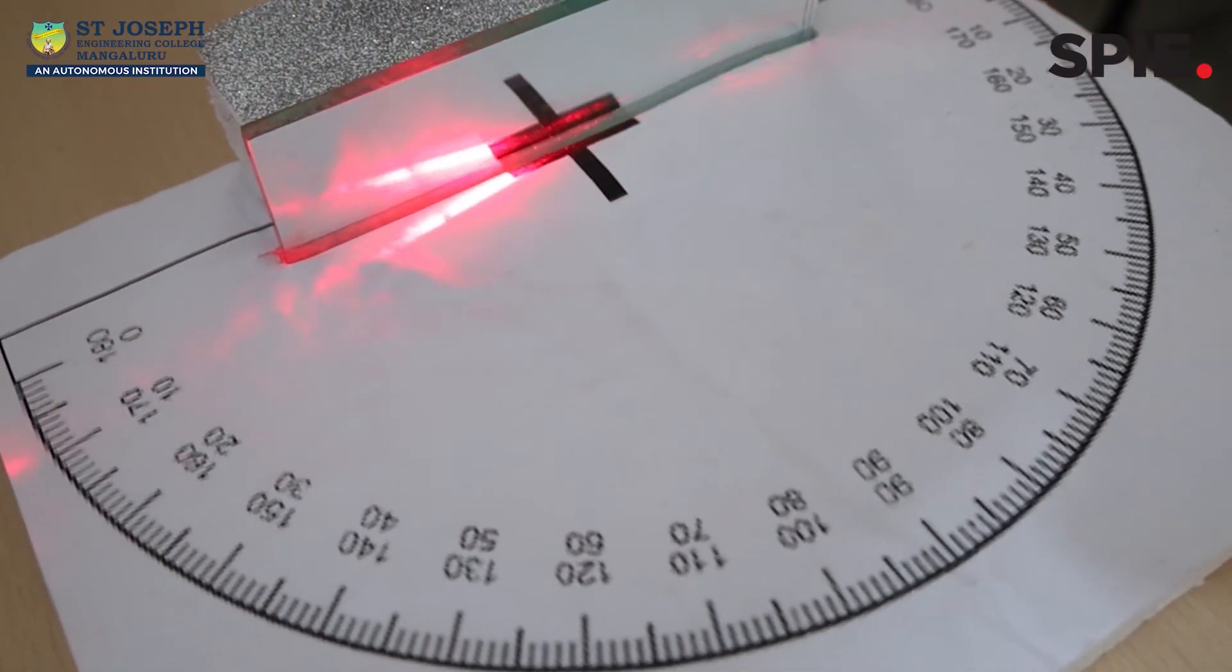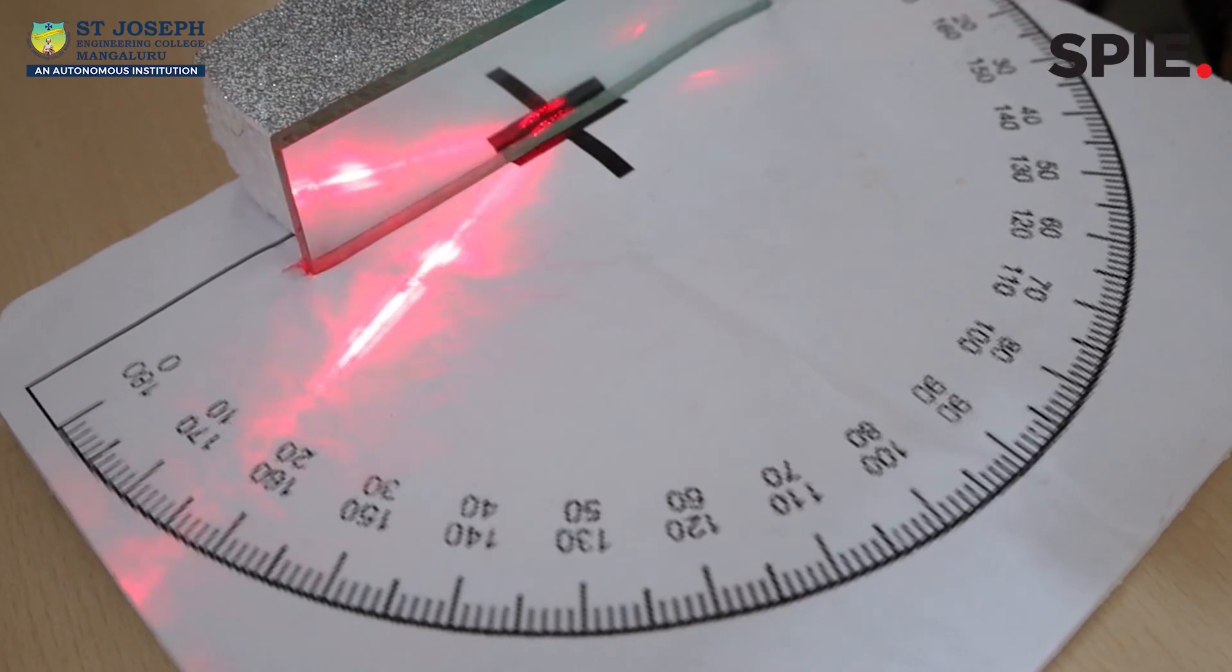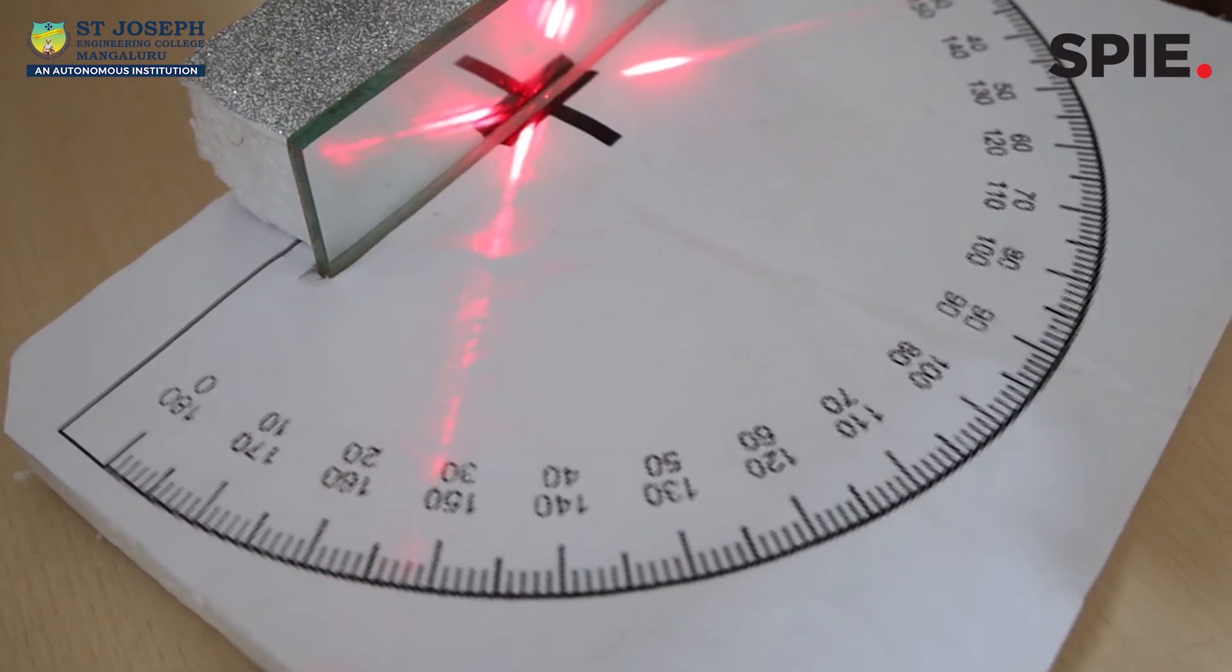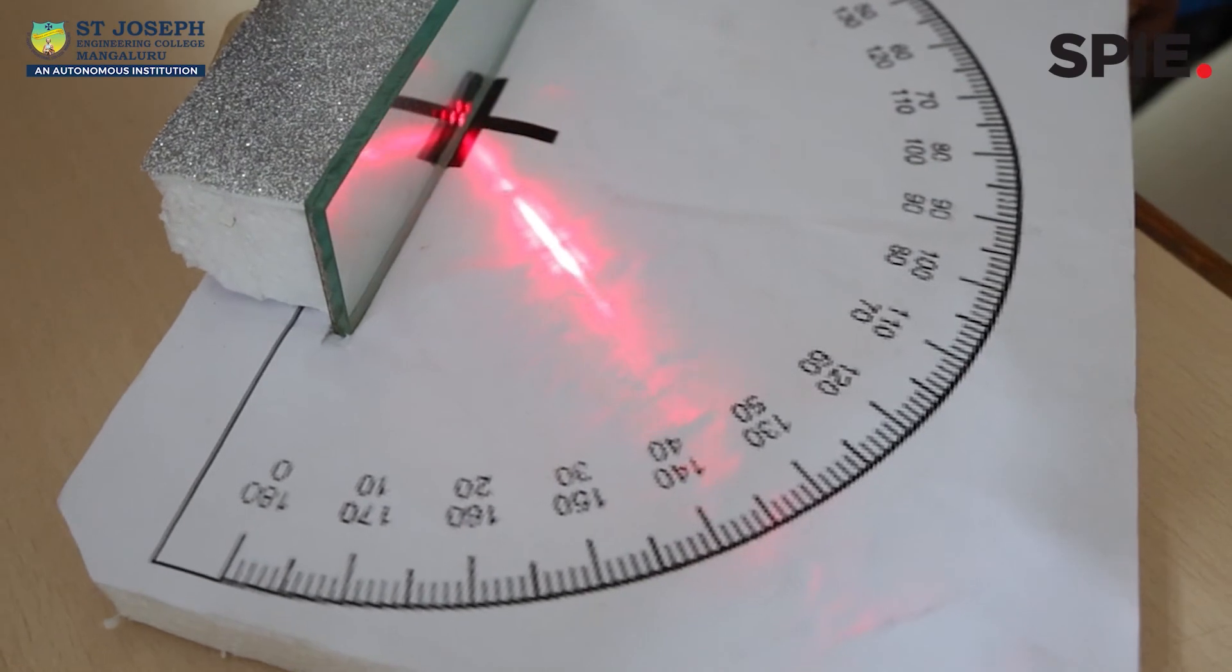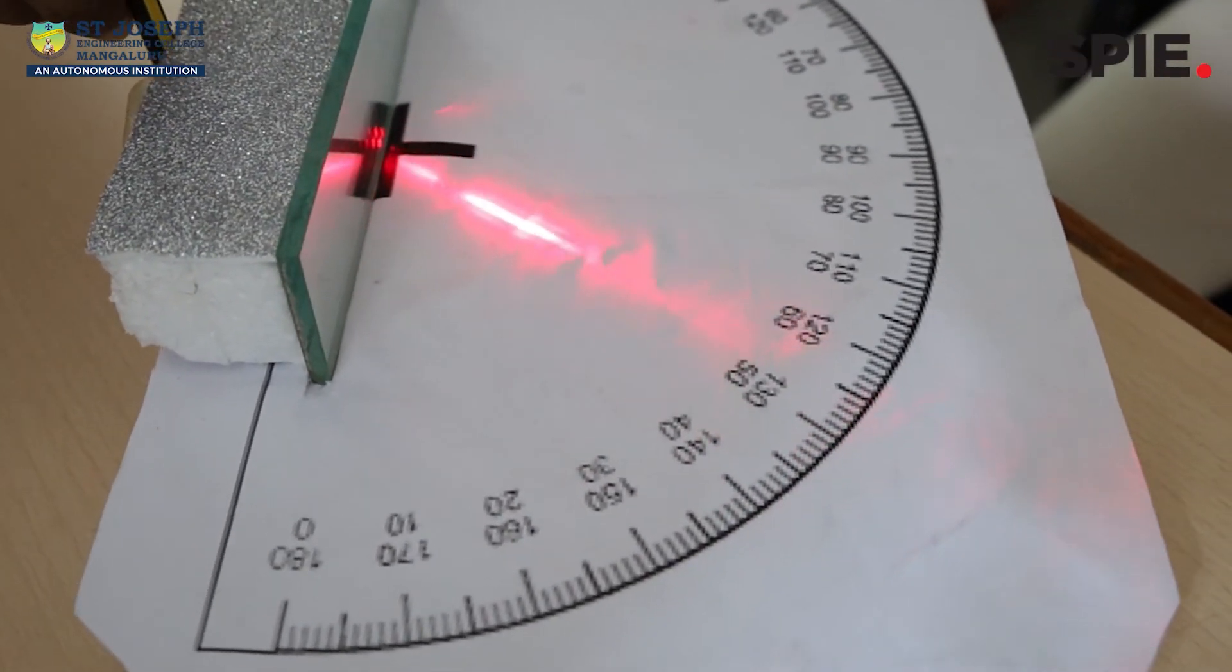From this experiment, we understand the law of reflection. It states that on reflection from a smooth surface, the angle of the reflected ray is equal to the angle of the incident ray.